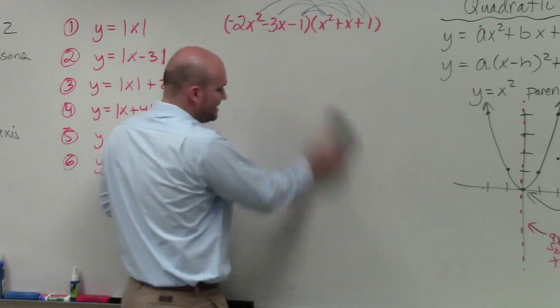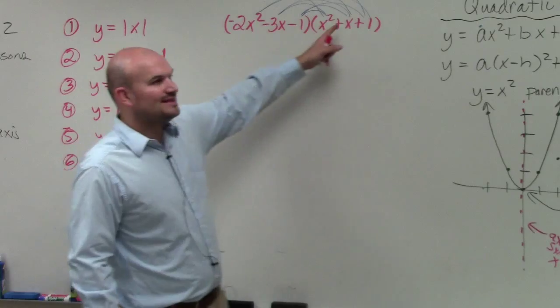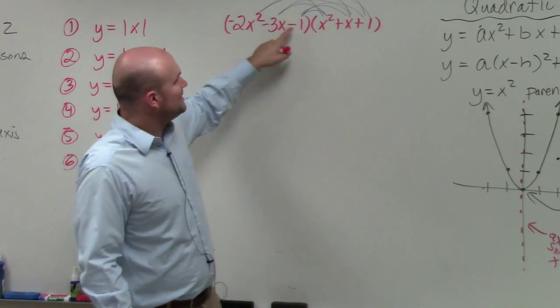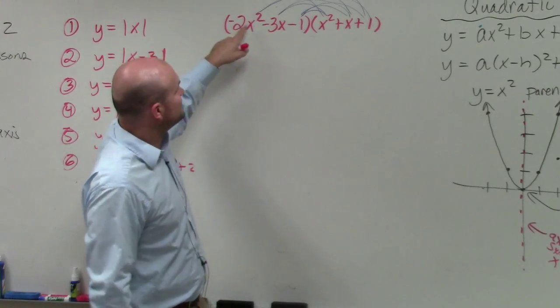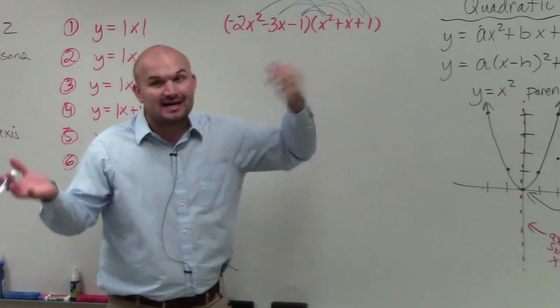So what's helpful about this is, you guys can see, look how many lines it looks like. I got to multiply negative 1 times all of these. Then I got to do 3x times all of these. Then I got to do negative 2x squared times all of those. Then I got to combine like terms.